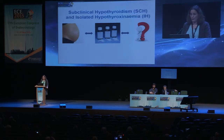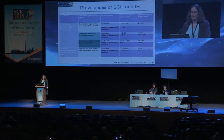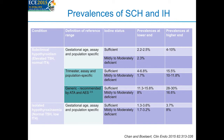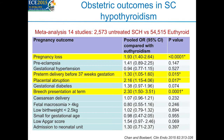Moving on to subclinical hypothyroidism and isolated hypothyroxinemia: prevalences vary quite widely according to the iodine status of the population and the assay methods used. A meta-analysis of 14 studies with a large number of subjects showed a significantly increased risk of pregnancy loss and preterm delivery before 37 weeks gestation, but not an increased risk of preeclampsia.